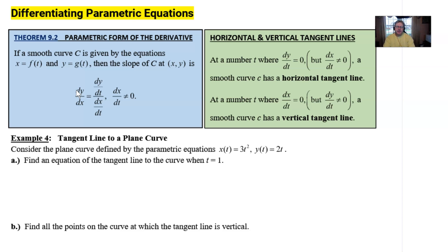Now what you see here in the blue box is what I'm going to refer to as my theorem 9.2. And it's going to be the parametric form of the derivative. And it basically says if you've got a smooth curve defined by x equals f(t) and y equals g(t),